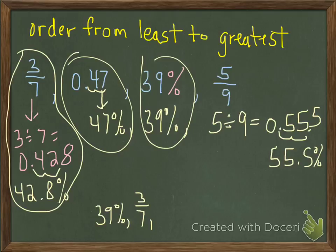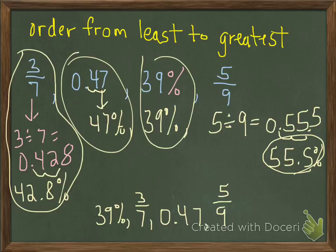And then 0.47 made 47%. So we want to write the original, which was 0.47. And our greatest of all these is 5 over 9, because we made that into 55%, 55.5, which is the greatest percentage of all four. So this would be the arrangement of those sequences. I'm sorry, this would be the sequence of those terms.